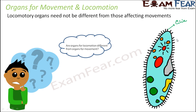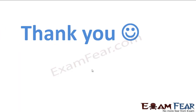Cilia also helps in other types of movement in paramecium. For example, cilia help food particles present outside to enter inside the oral groove of the paramecium. They move just like a broom and propel small food particles to move inside the oral groove. So cilia helps in different types of movements as well as locomotion. This is just one example.